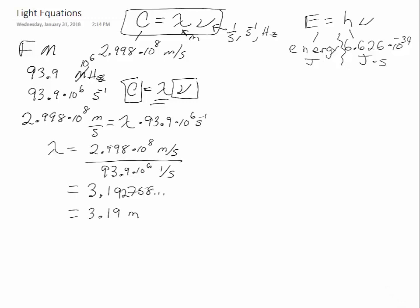For the 93.9 Bob FM example, if 93.9 megahertz is the frequency, that's 93.9 times 10 to the sixth inverse seconds. Using the equation c equals lambda nu, the speed of light equals lambda times the frequency.